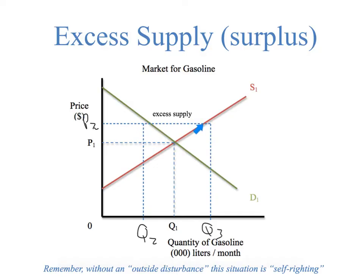So what will suppliers do? They only really have one choice, because now there's all this excess gasoline in the marketplace — they're going to have to start cutting price until that excess supply, which was the result of suppliers trying to push up the price without any outside disturbance, is eliminated. They're going to have to cut the price back to the original price of P1. At that point, the situation is self-righting, and P1, Q1 was what actually transpired in the marketplace. The original equilibrium point was met again. That is excess supply, or surplus.